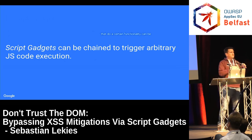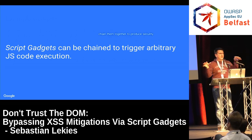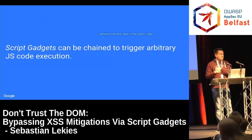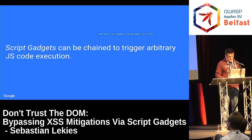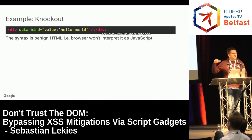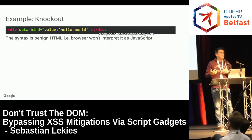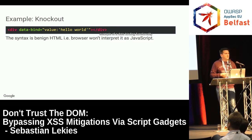Gadgets that do certain functionality can be chained together. You can take different functionalities from different libraries, trigger them individually, chain them together to perform security-sensitive actions, and in the worst case trigger arbitrary JavaScript code. We have several examples. In the next slides I'll use Knockout as an example, but these examples really work for all the libraries out there.